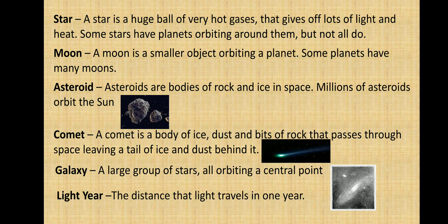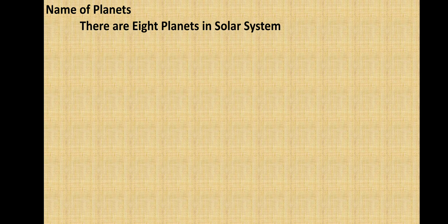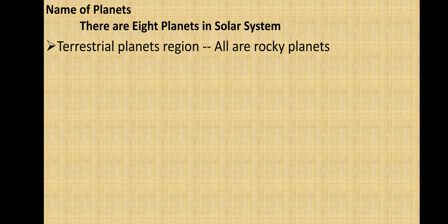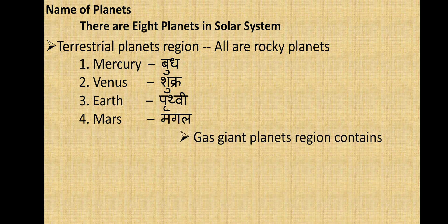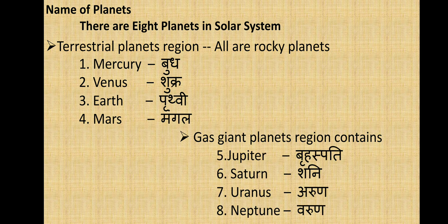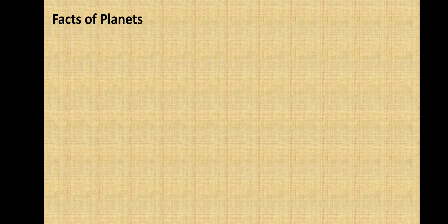A light year is the distance that light travels in one year. Now, there are eight planets in our solar system. We classify them into two types: the first is the terrestrial planet region, which consists of all rocky planets — Mercury, Venus, Earth, and Mars — and the second type is gaseous planets: Jupiter, Saturn, Uranus, and Neptune.